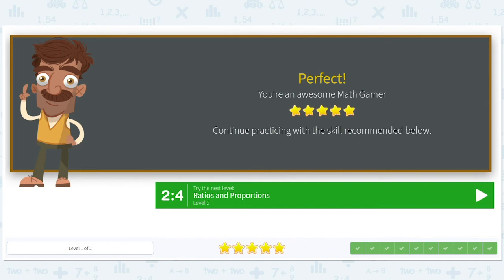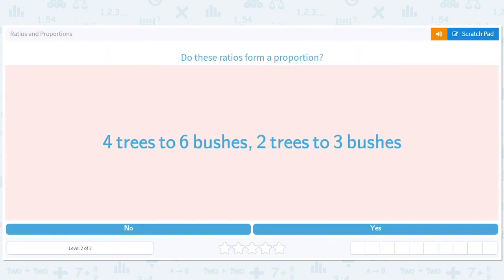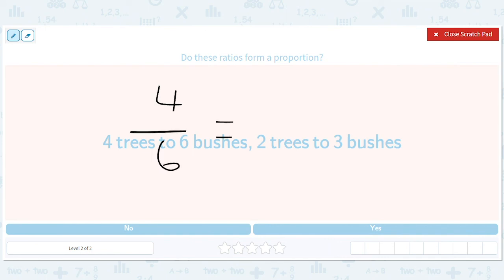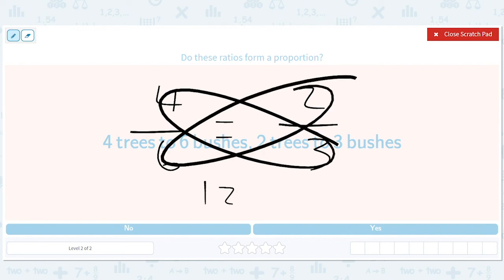All right. Let's take a peek here. Okay. Seems like the same thing. So four out of six equals two out of three. Those seem the same, right? 12, 12. Yes.